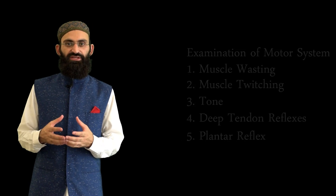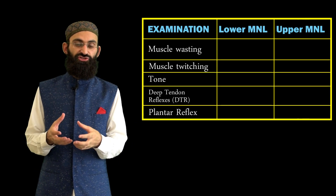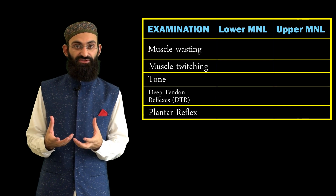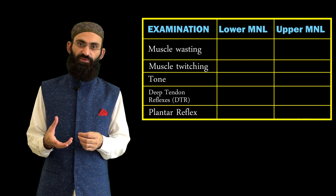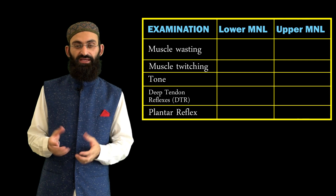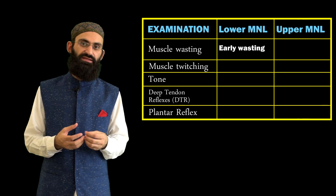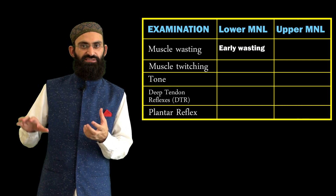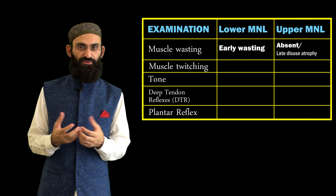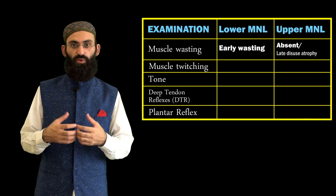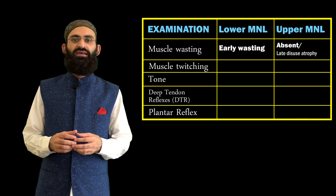Lower motor neurons maintain muscle growth through induced contractions and release of trophic factors that cause protein synthesis in muscles. In lower motor neuron weakness, there is denervation atrophy, so early wasting is a feature. In upper motor neuron weakness, since lower motor neurons are intact, wasting is not common except in advanced disease where disuse atrophy may develop.